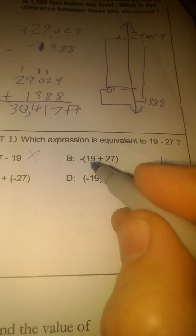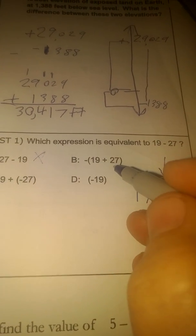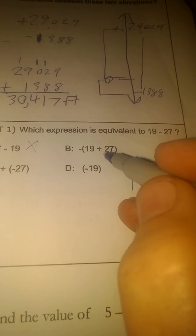This is just reversing the signs of everything on the inside. This is the same as negative 19 plus negative 27. It's going to be negative, but it's going to be a whole lot more negative than what we want.